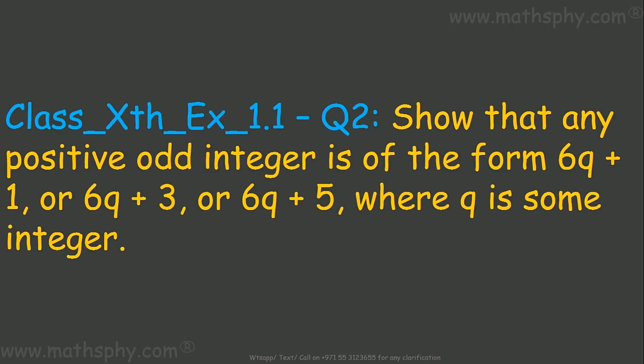This question here says show that any positive odd integer is of the form 6q+1 or 6q+3 or 6q+5, where q is some integer.